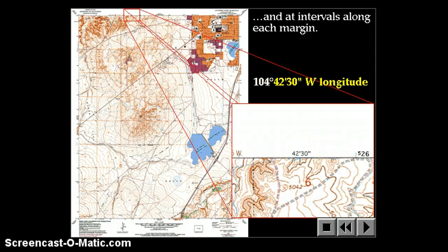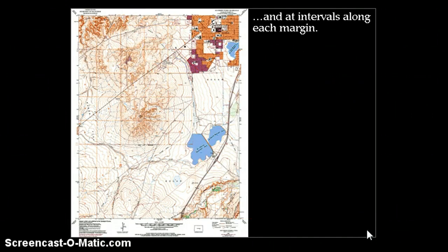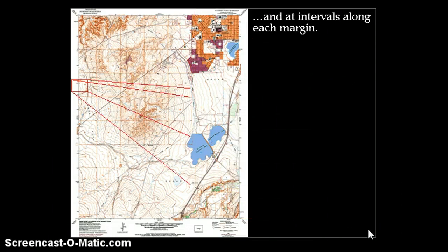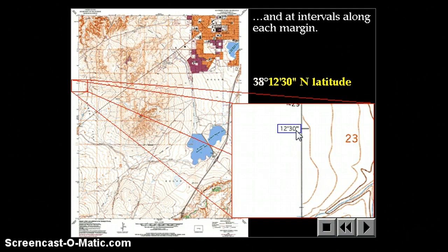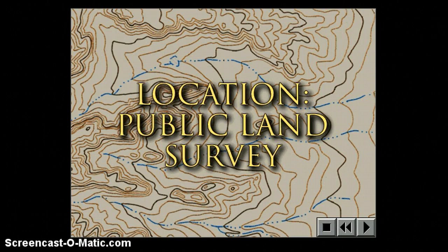Occasionally you'll see markings at intervals along the top as well. Notice they only show 42 minutes 30 seconds without marking the degree — that's because this is a seven-and-a-half-minute quadrangle. The map covers less than a degree — only seven and a half minutes of a degree. Whatever the degrees were in the corners, those same degrees apply along the entire edge of the map. So to identify latitude and longitude, just look for degrees, minutes, and seconds symbols. In the next video, we'll talk about the public land survey system.